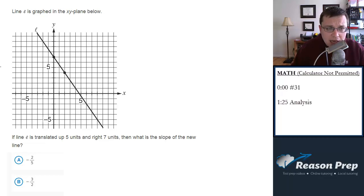Line L is graphed in the xy-plane below. If line L is translated up 5 units and right 7 units, then what is the slope of the new line?